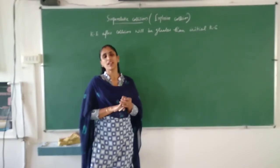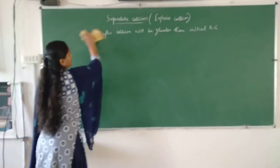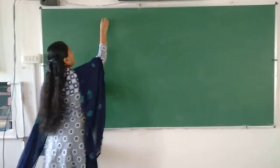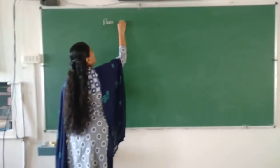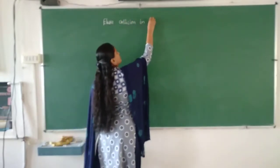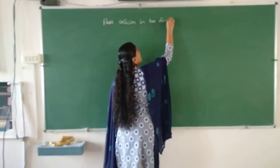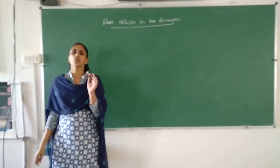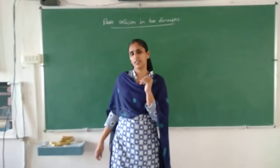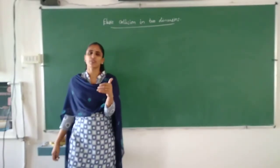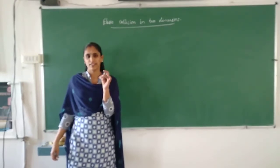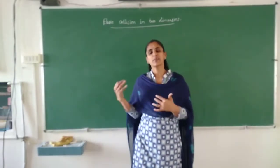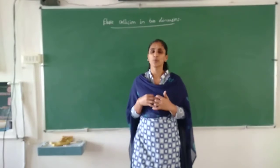Now we will discuss about elastic collision in two dimensions. So far we considered two objects moving in a straight line, and after collision also moving in a straight line. Here we are considering that initially an object is coming in a straight line but after the collision the two objects go in different directions. We will discuss how to write the expressions for conservation of momentum and conservation of kinetic energy in such a case.